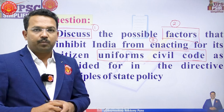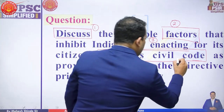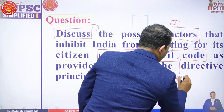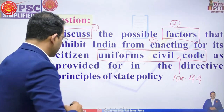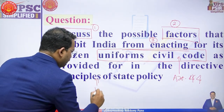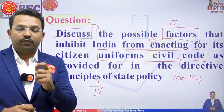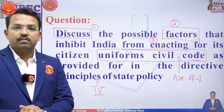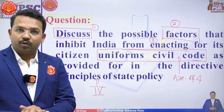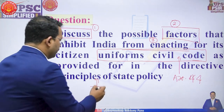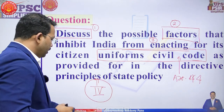Here are certain factual things to note. First, the Uniform Civil Code is provided in Article 44 of the Indian Constitution. DPSPs are given in Part 4 of the Indian Constitution. These two factual points should be the beginning of your answer — that the Uniform Civil Code is given in Article 44 of the Directive Principles of State Policy, which is in Part 4 of the Indian Constitution.